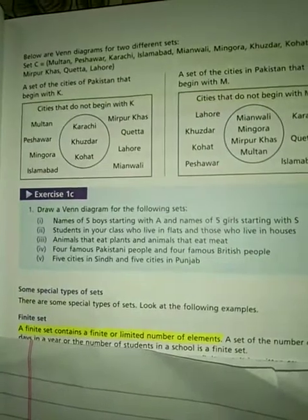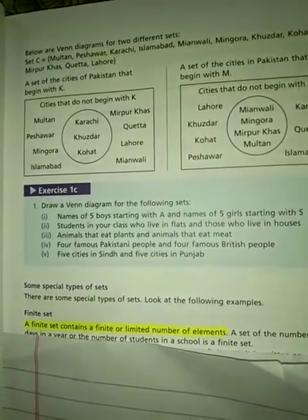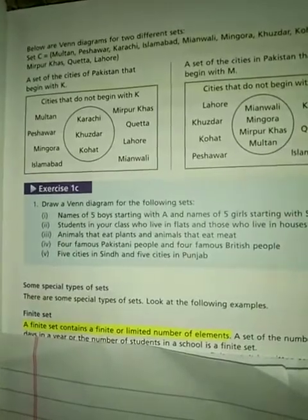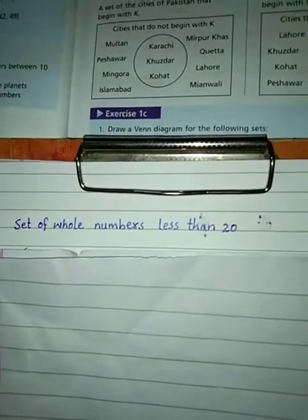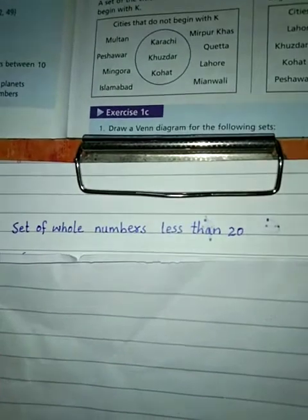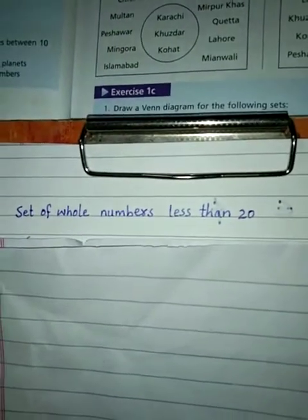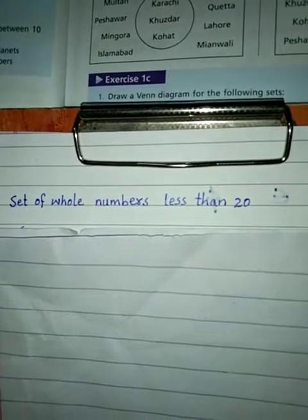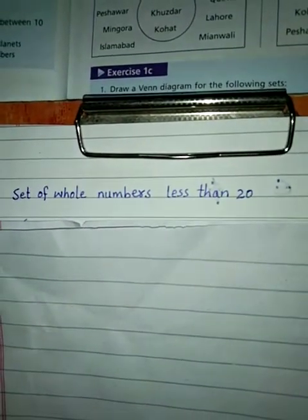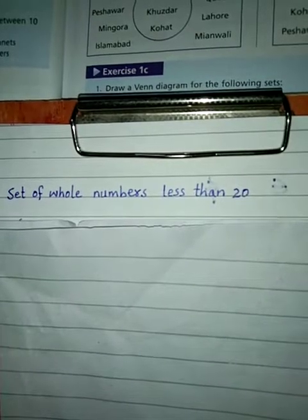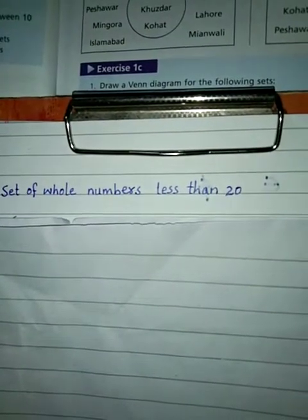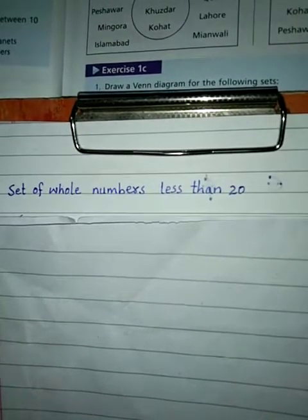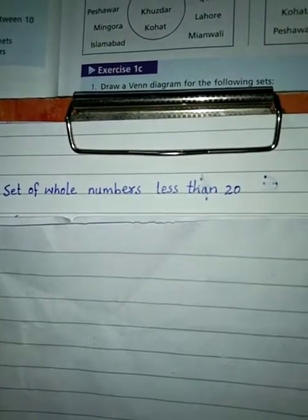First we have finite set. A finite set is a set having a finite or limited number of elements — یعنی جو set ہوتا ہے اس میں elements limited ہوتے ہیں۔ For example: set of whole numbers less than twenty. Whole numbers zero سے start ہوتے ہیں، جبکہ natural numbers one سے۔